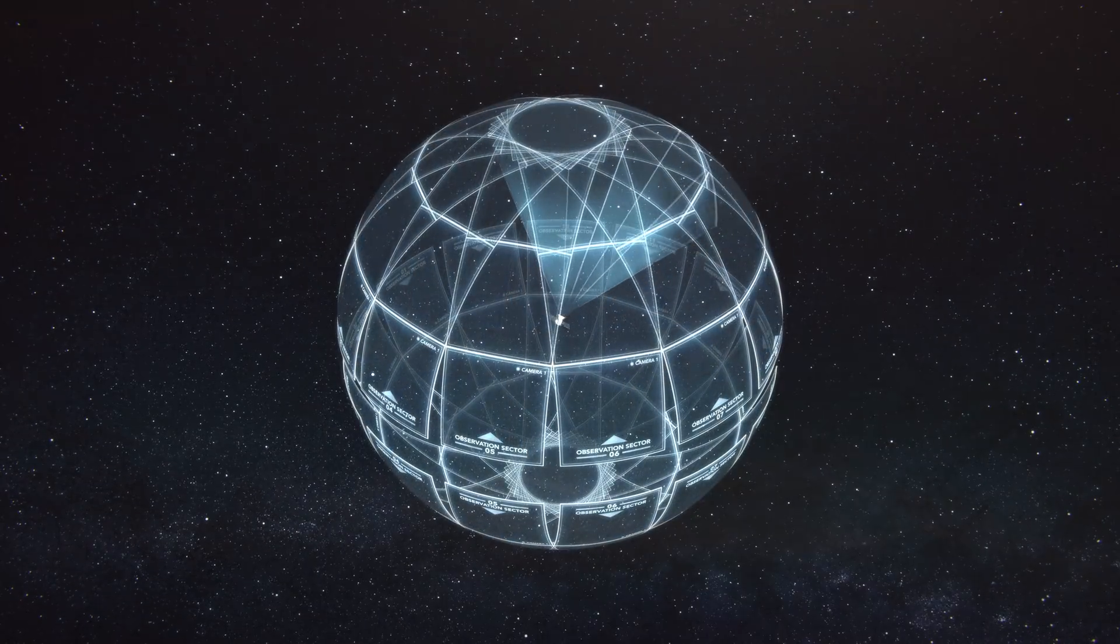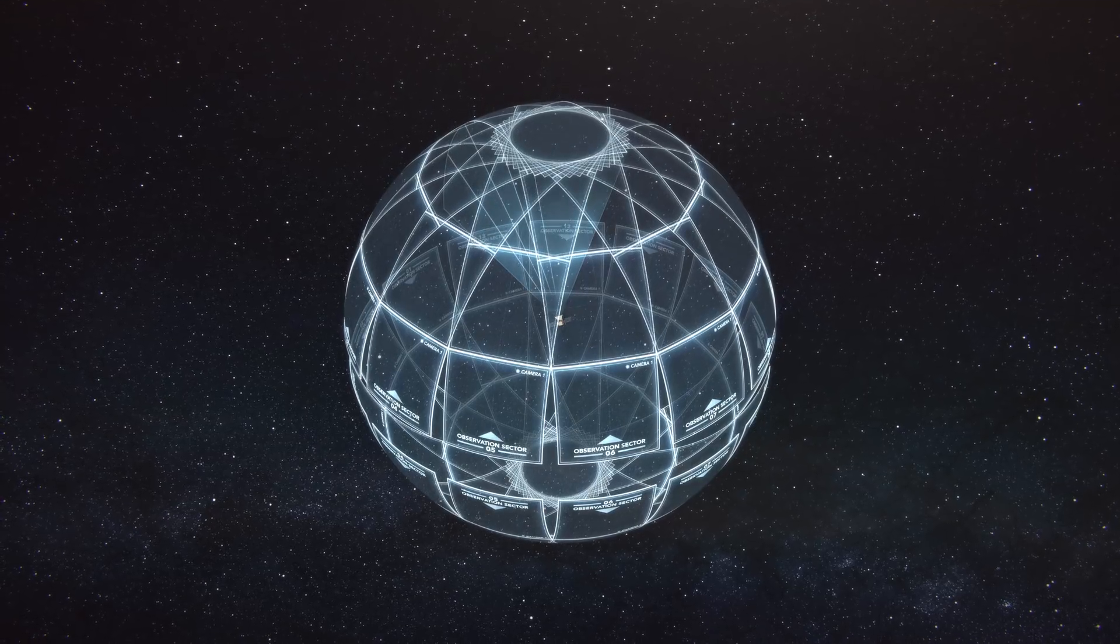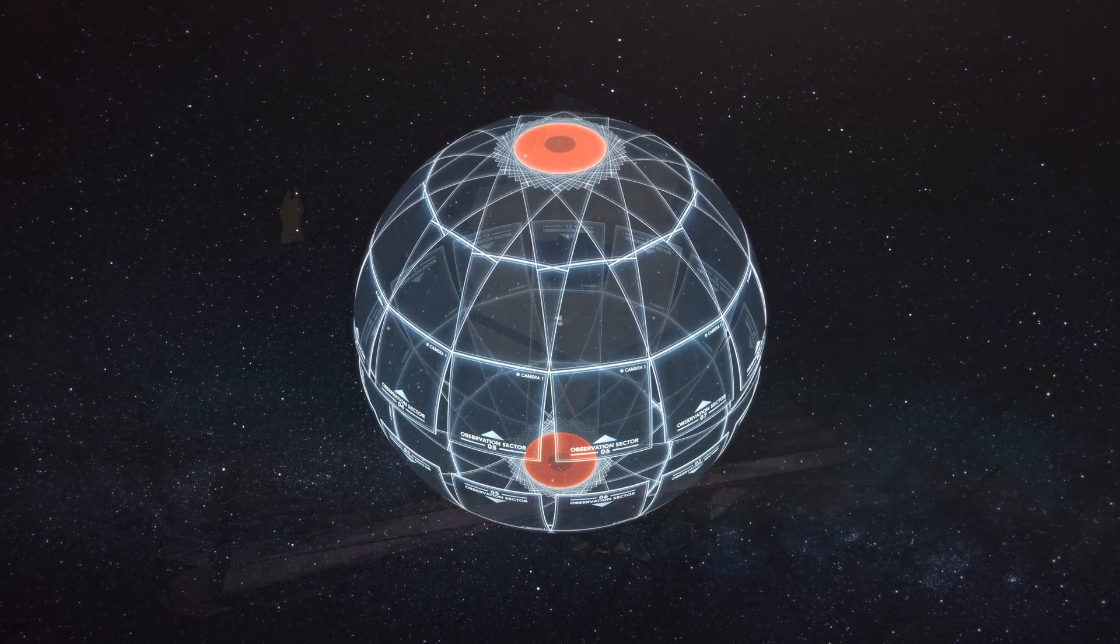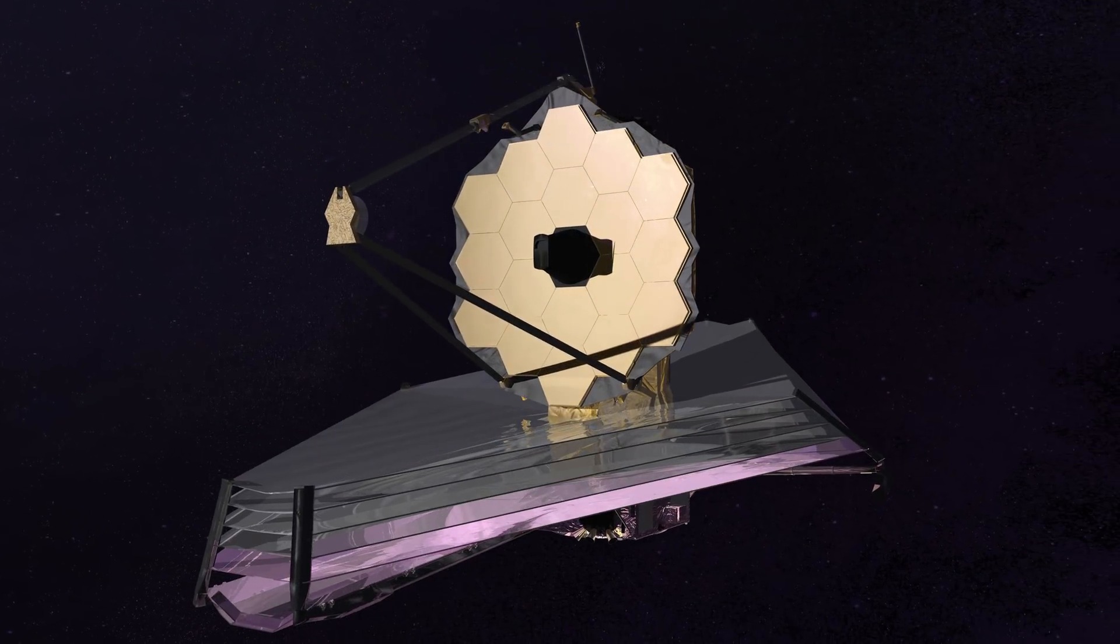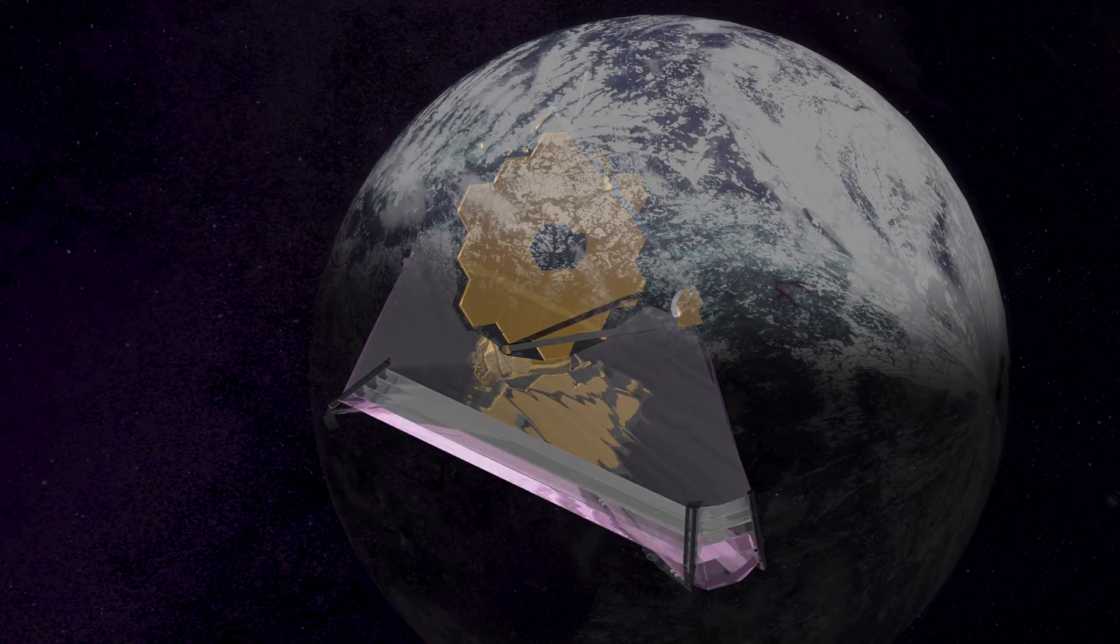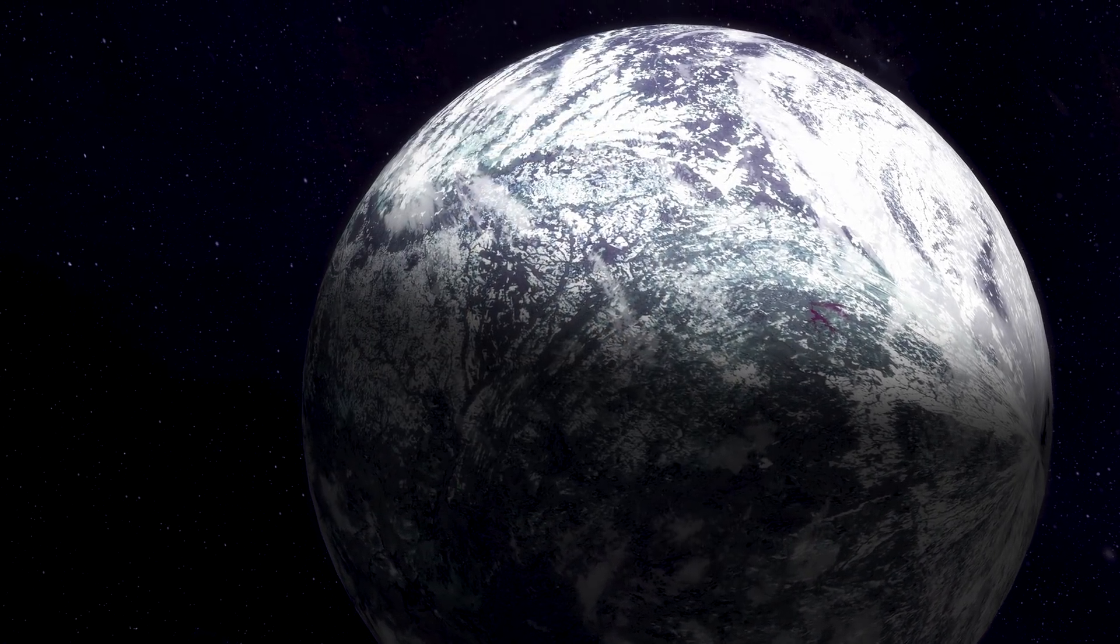Because TESS' observation sectors overlap, it will have an area near the pole under constant observation. This region is easily monitored by the James Webb Space Telescope, which allows the two missions to work together to first find and then carefully study exoplanets, expanding our understanding of worlds beyond our own.